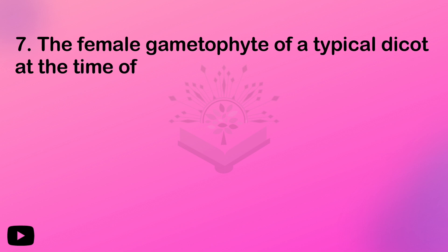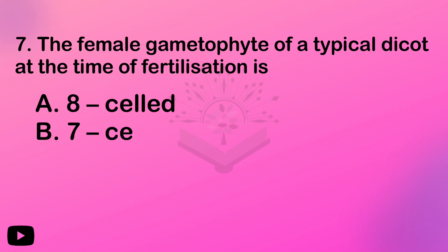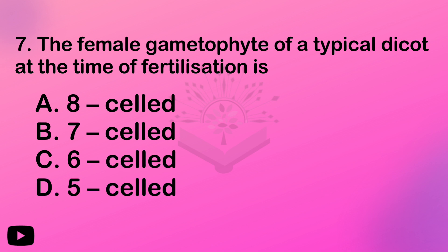Next: the female gametophyte of a typical dicot at the time of fertilization — how many cells are in the female gametophyte? We have the embryo sac: three antipodals, two synergids, two polar nuclei — that gives seven cells. Plus one large central cell — seven cells in total.